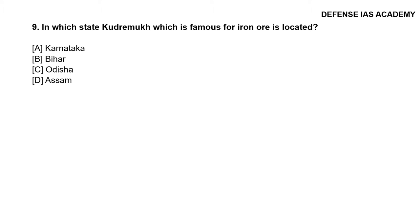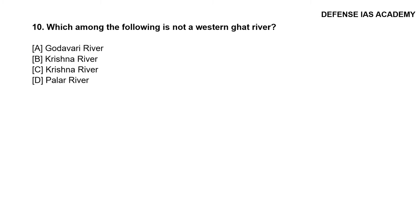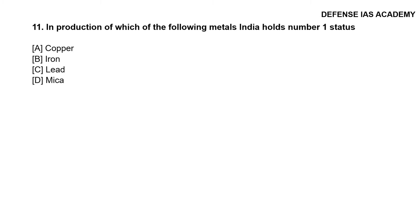Question 9: In which state is Kudremukh, which is famous for iron ore, located? The correct answer is option A, Karnataka. Question 10: Which among the following is not a western Ghat river? The correct answer is option D, Pallar River.